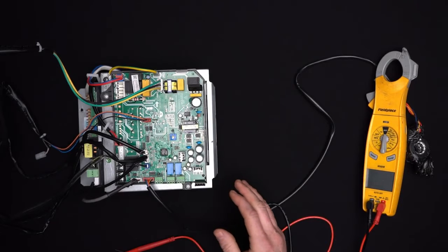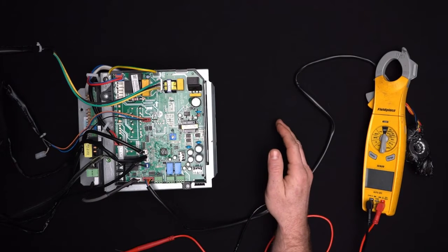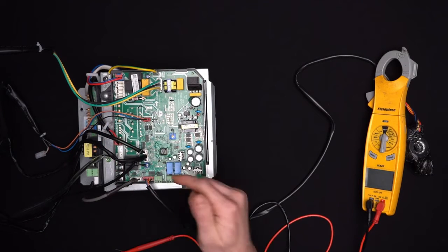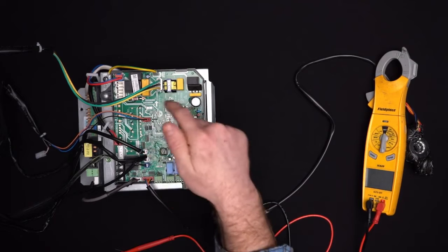So once the board has power, you've verified that there's power coming into the unit, you should verify that the power is going into the board. Once you have power going into the board, then you know that you should be getting power to your relays.